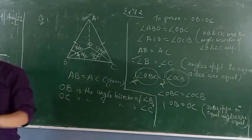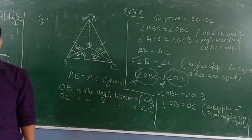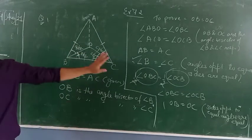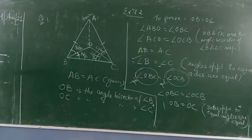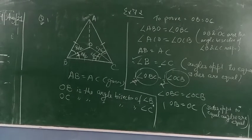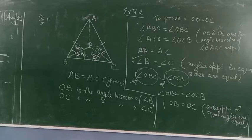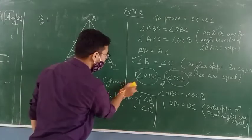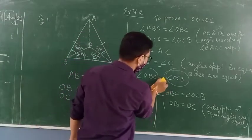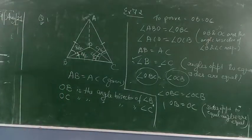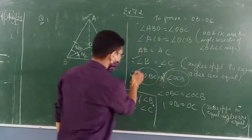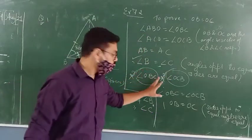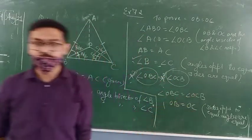Sides opposite to equal angles are also equal. So this is the proof of the first part. Instead of writing half, you can write it as: angle B equals twice of angle OBC. So twice cancels off and we get OBC equals OCB.